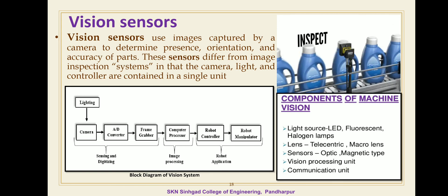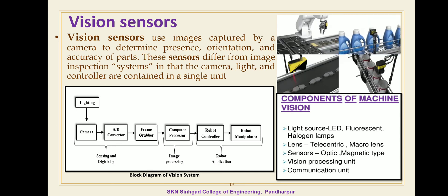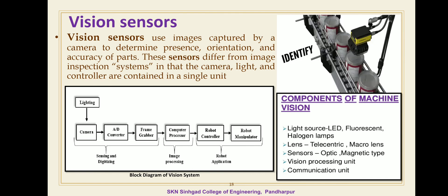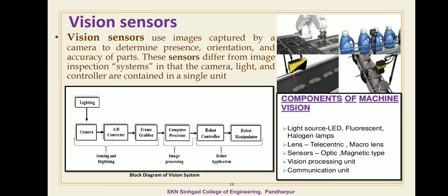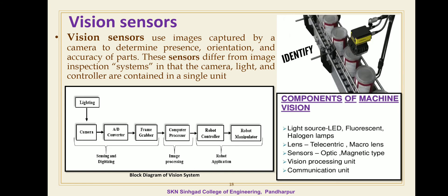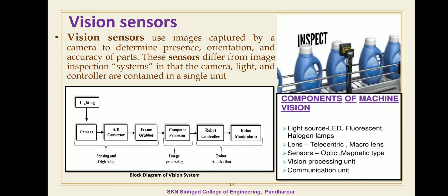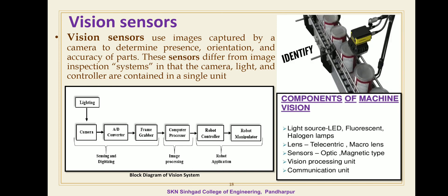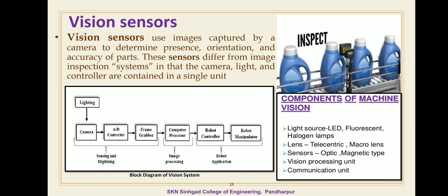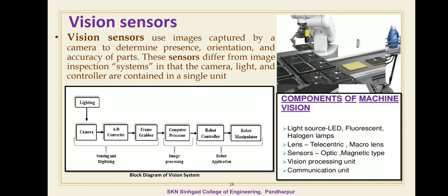Vision sensors use images captured by the camera to determine presence and orientation — they directly find the presence of an object, or the exact position and orientation of an object with the help of a camera. The different functions of the vision system are: sensing and digitizing, image processing, pre-processing, segmentation, description, and recognition. In sensing and digitizing, this process yields a visual image of sufficient contrast and brightness that is typically digitized and stored in computer memory.